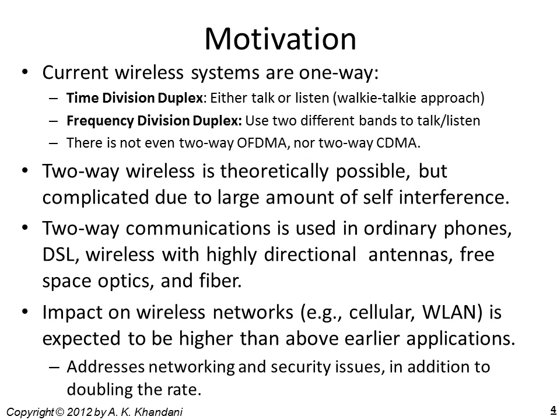Full duplex wireless is complicated due to potentially large amounts of interference between transmitter and receiver units in a radio. Interestingly, full duplex communications is used in almost every telecommunications technology—ordinary phones, DSL, wireless with highly directional antennas, free space optics, fiber—but not in wireless networks, although the impact on wireless networks like cellular and WLAN is expected to be much higher, because two-way addressing also covers networking and security issues in addition to doubling the rate.